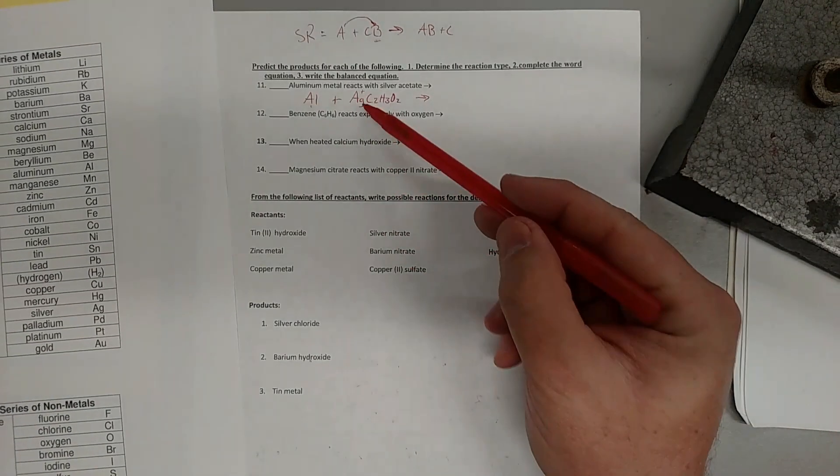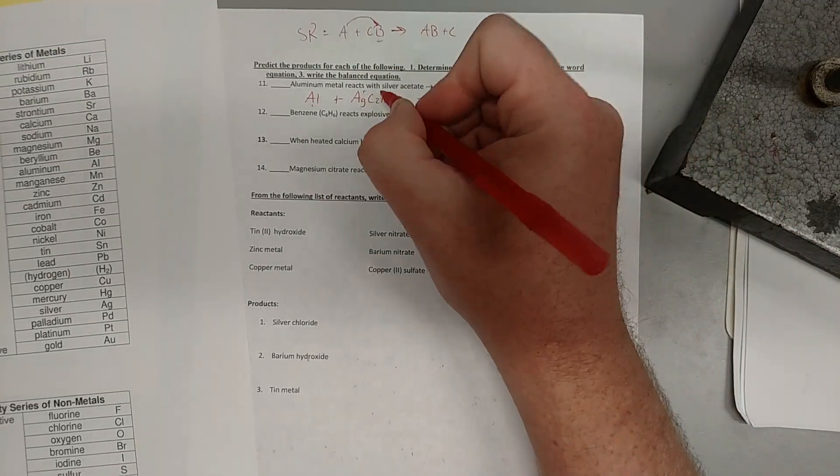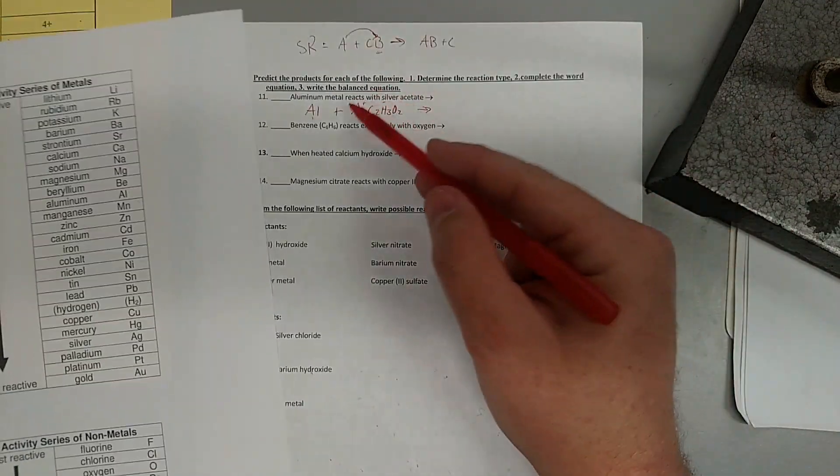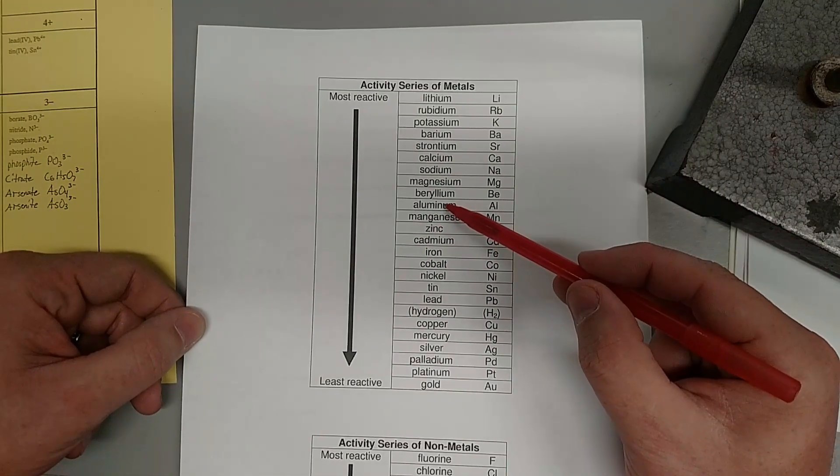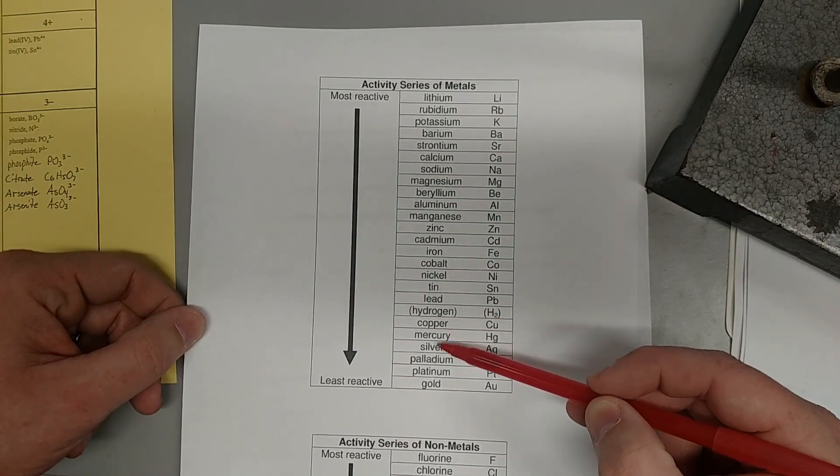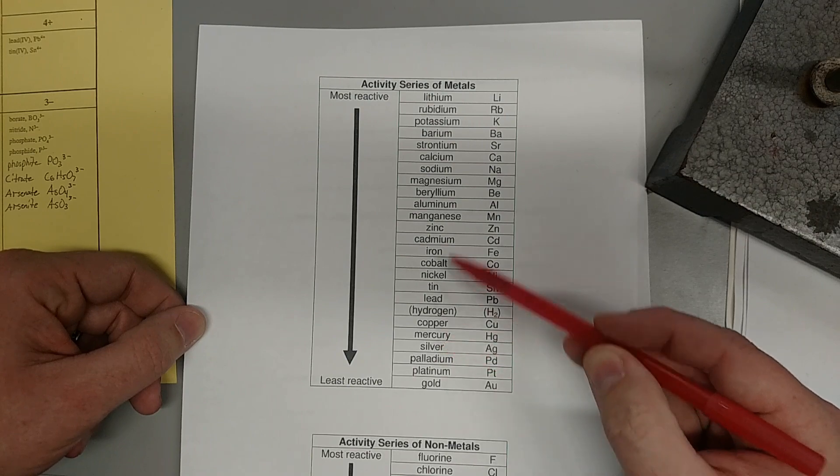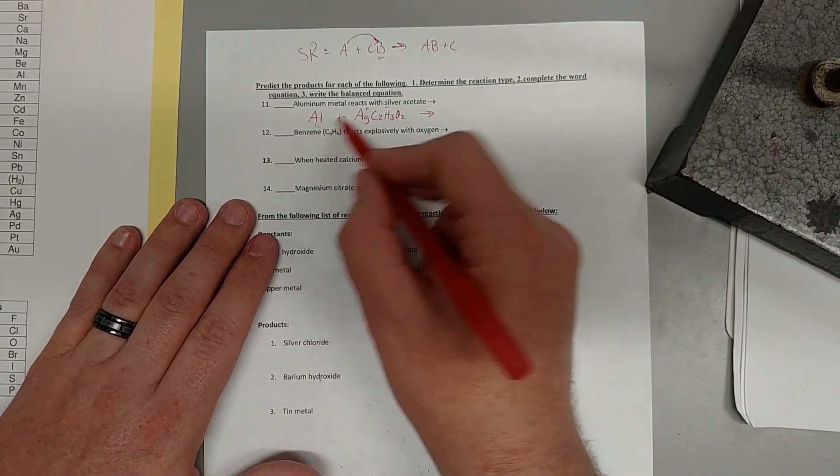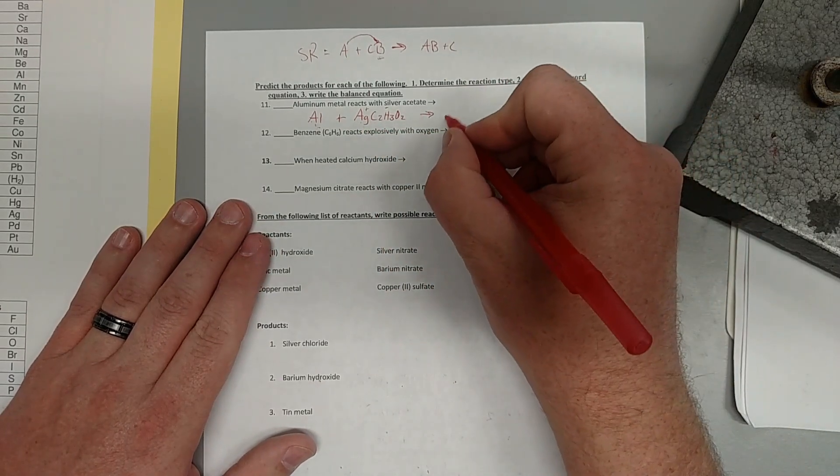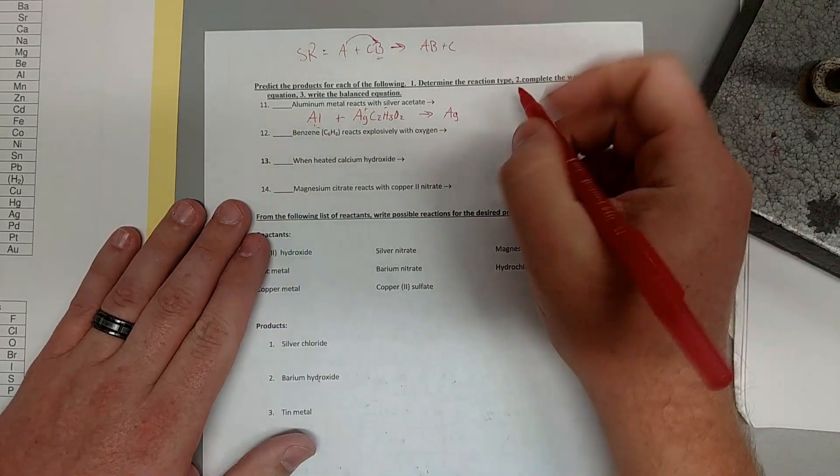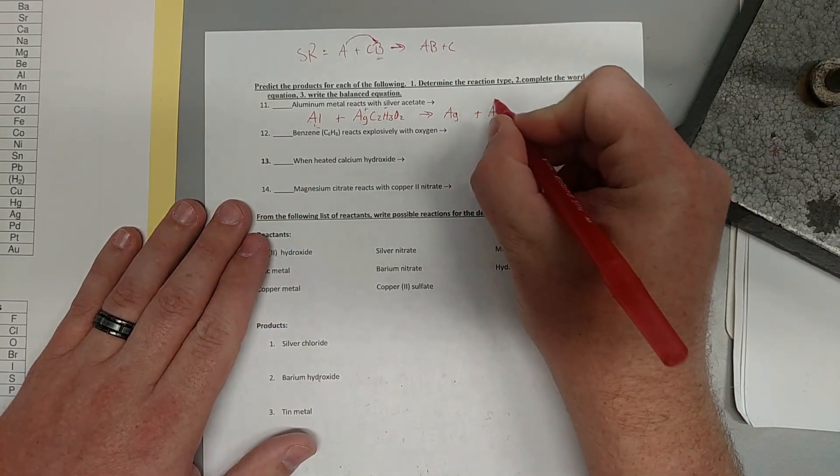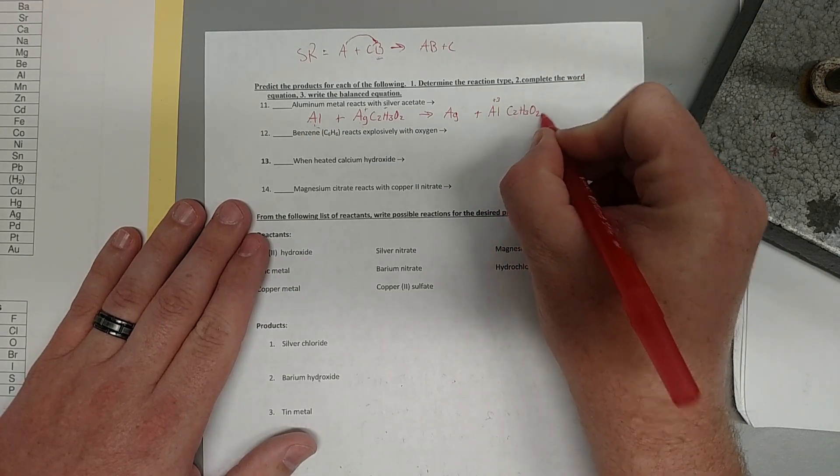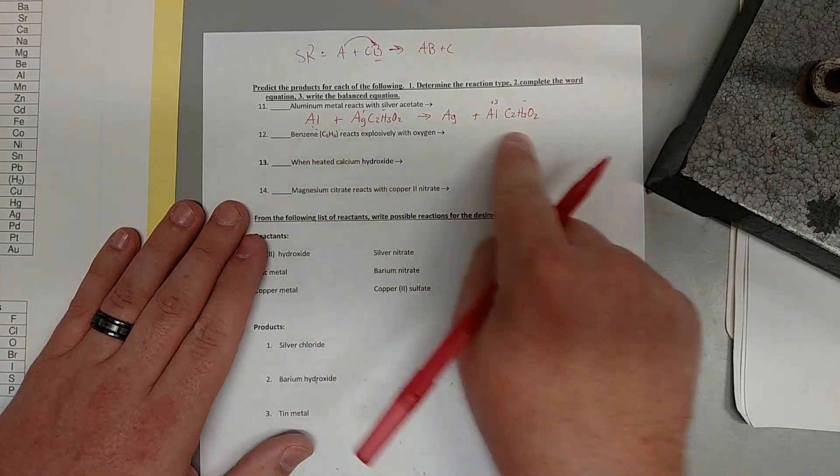So here we have silver, silver is the one with the partner. And so, can our aluminum, which is right here, take away the silver's partner? And the answer is yes, the aluminum can force the electrons onto the silver and become aluminum ions. C2H3O2, there's our acetate, single replacement.